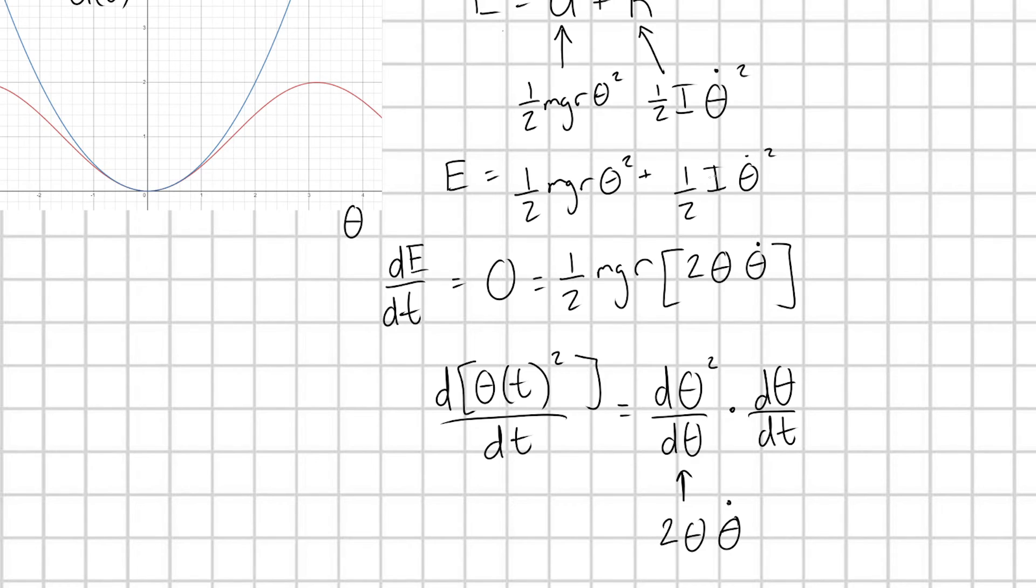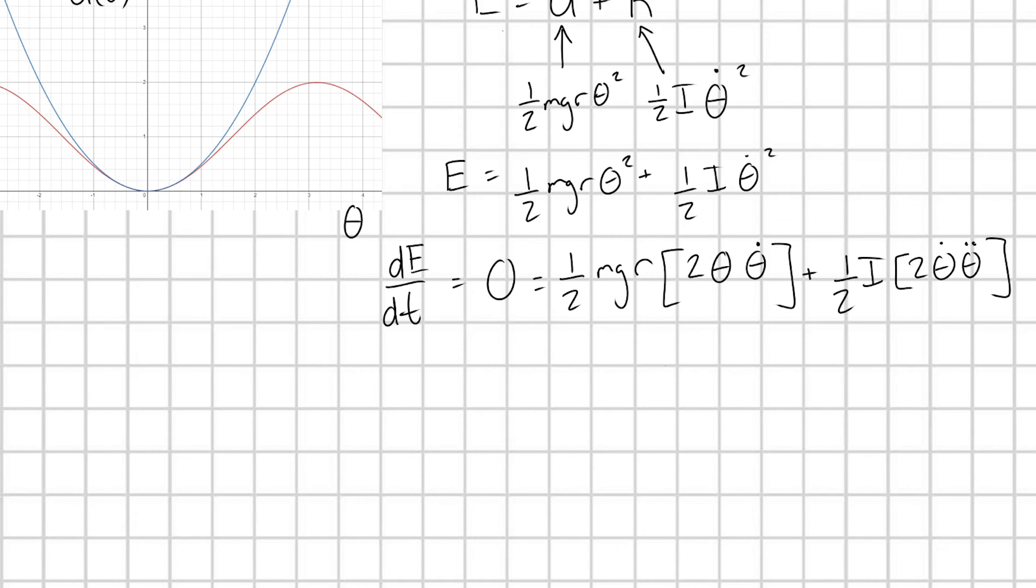Okay, so we can do the exact same thing for this next term here. And we're going to have plus one half I times, we take this derivative here, apply the chain rule, 2 theta dot, theta double dot. And so now let me go ahead and cancel out terms. This one half cancels with 2, this guy cancels. And we can divide through this whole thing by theta dot. And so we have 0 is equal to mgr theta plus I theta double dot. Or I'm going to have theta double dot plus mgr over I times theta is equal to 0.